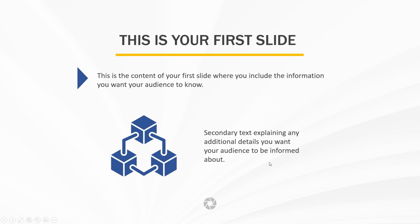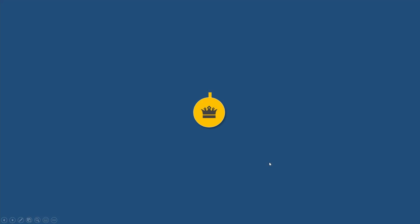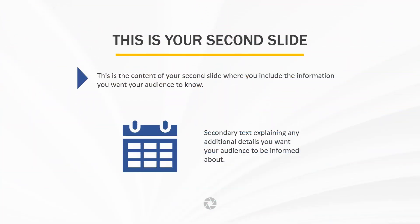Here we are in the first slide of our presentation, and if I click anywhere on the screen, the transition activates and the second slide shows up. So what are we going to do differently now?